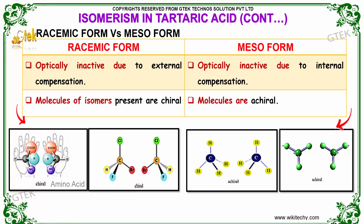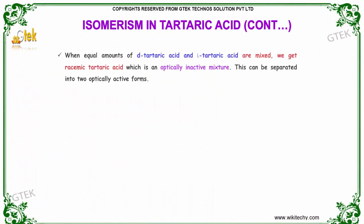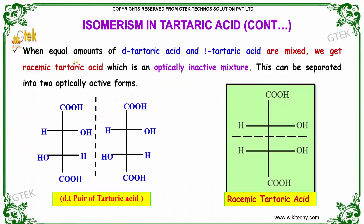Meso forms contain molecules which are chiral, whereas racemic form contains molecules of isomers which are chiral. When equal amounts of dextrotartaric acid and levotartaric acid are mixed, we get racemic tartaric acid, which is an optically inactive mixture.